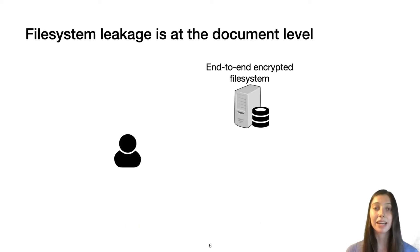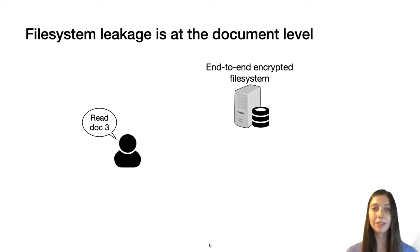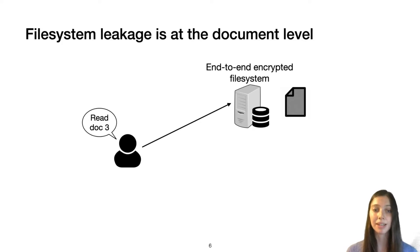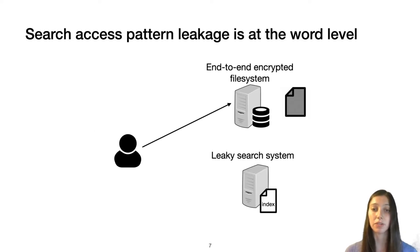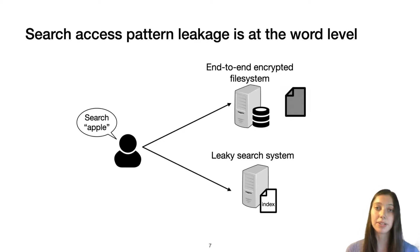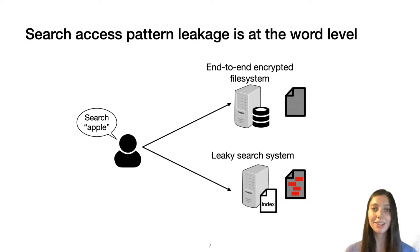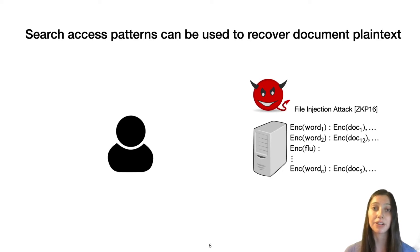I'm going to start off by discussing search access patterns and compare them to the leakage in many end-to-end encrypted file systems. If a user wants to read Document 3, the server learns that the user requested that document, but not its contents since the document is encrypted. However, with a leaky search system, when the user searches for a keyword like Apple, the server starts to learn information at the word level. So it's no longer just learning that a document was accessed, but is now learning information within the document contents itself.